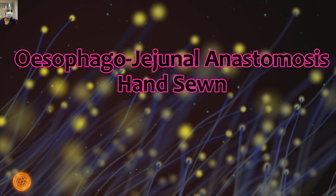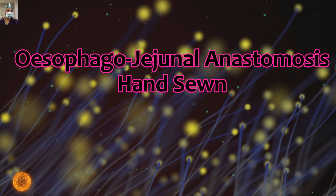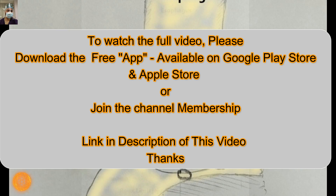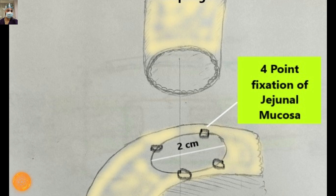Coming to the talk of this video: the esophagus has been transected at the desired level and the Roux limb has been fashioned. We first make an enterotomy on the Roux limb — that is the jejunum. As the diameter of the esophagus is roughly 2.5 centimeters, always keep the enterotomy on the jejunum a little smaller, roughly two-thirds of the esophageal opening, and never more than two centimeters. This enterotomy on the jejunum always tends to expand, creating a discrepancy. Always measure it with a measuring scale and keep it just under two centimeters.